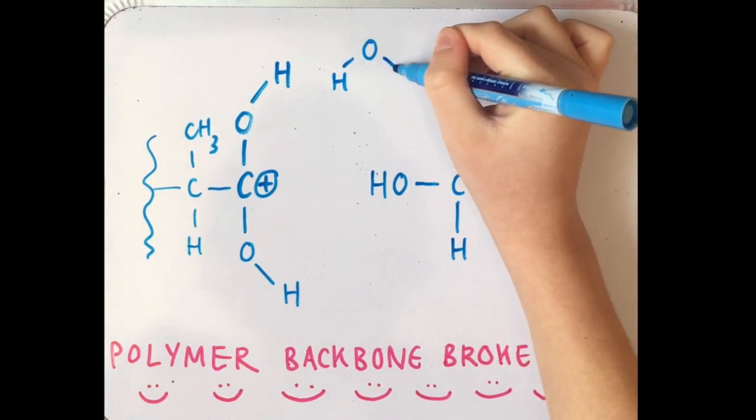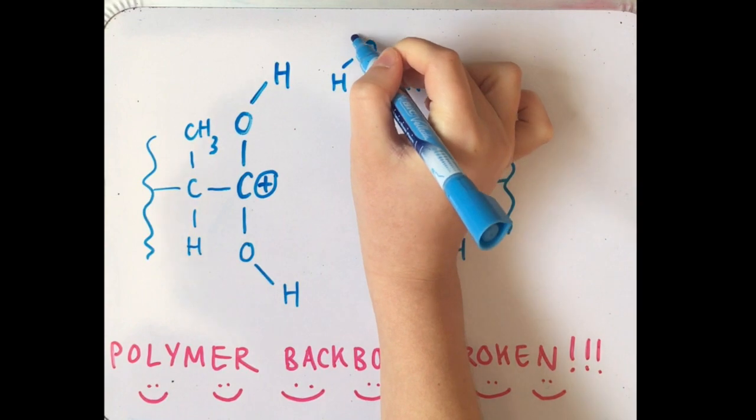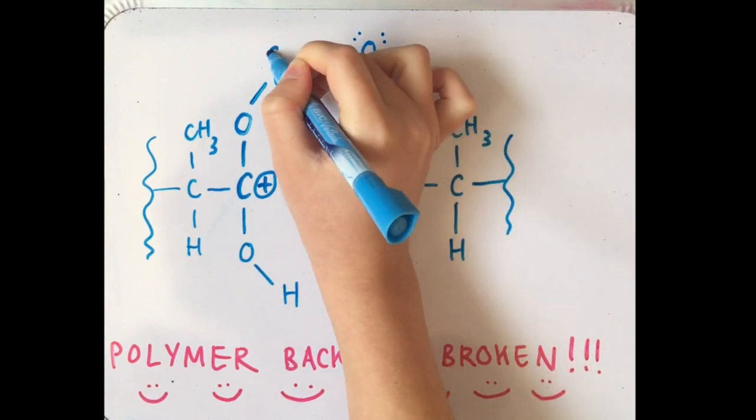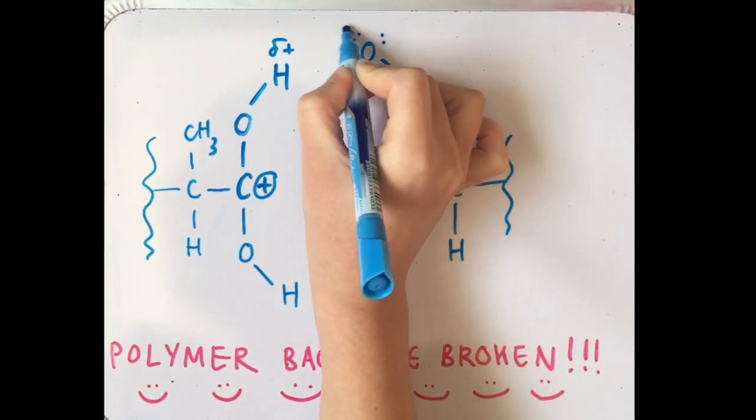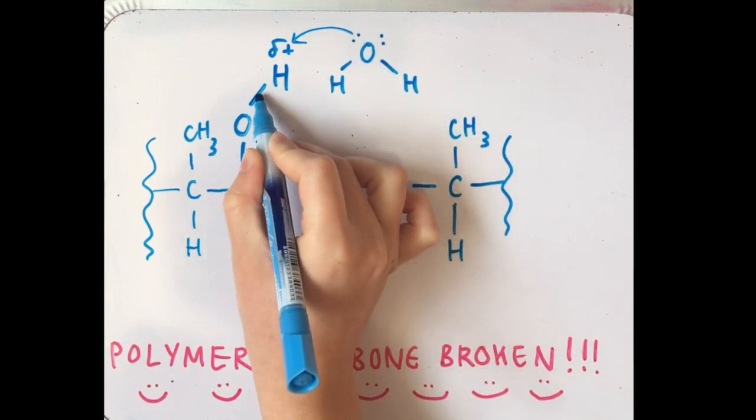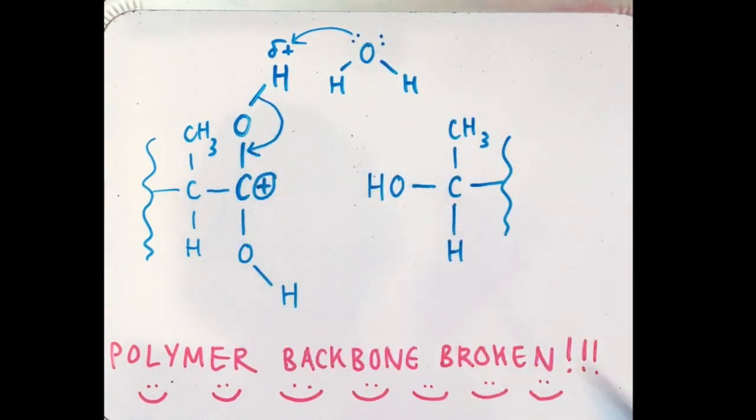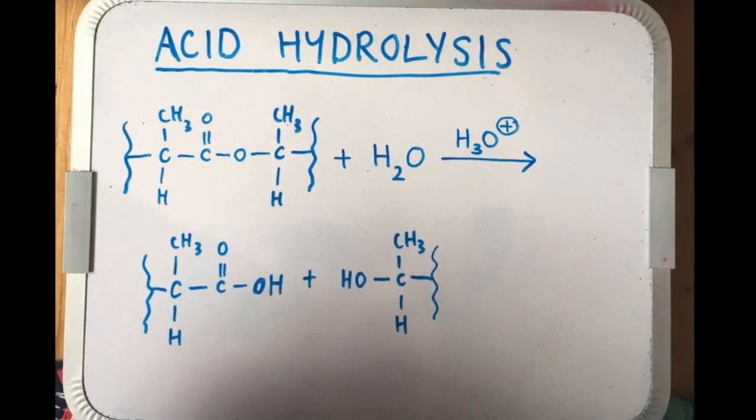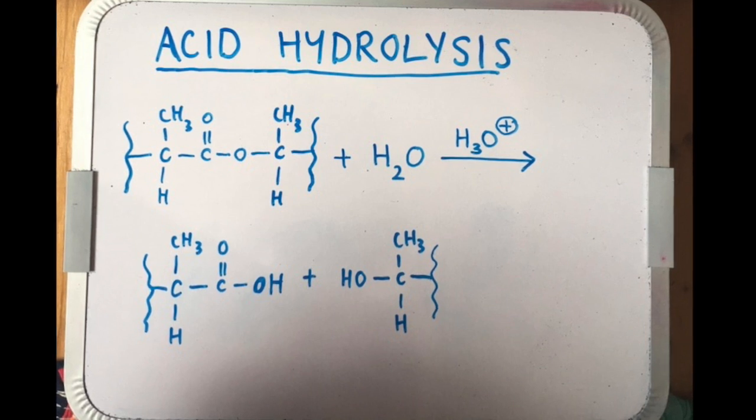However, a carbocation is not a stable molecule and carbon likes to have four bonds. So we add a water molecule which will be protonated and allows the bonding electron pair in the OH bond to be donated to the carbon. The products of acid hydrolysis are a carboxylic acid and an alcohol.